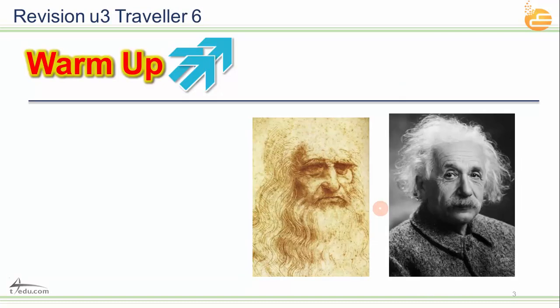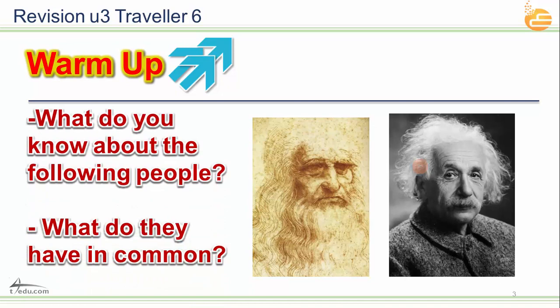So you remember the two geniuses, those two who have really special talents. This is Leonardo da Vinci, who painted the Mona Lisa painting, one of the most expensive and most famous paintings all around the world. And the second one is Albert Einstein, who's the master of science and math. So what do we know about people? We just told you about these people — they're very famous.